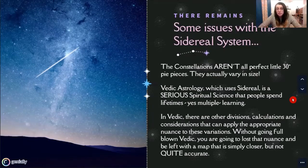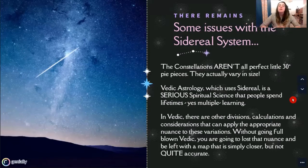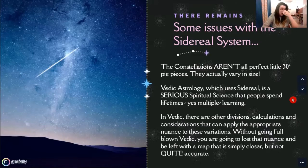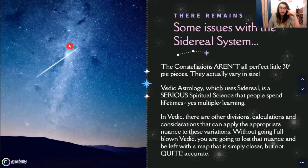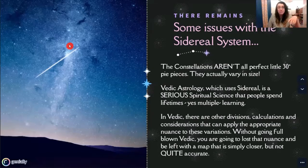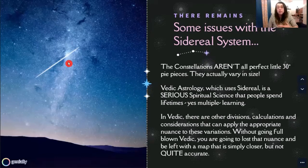There remain some issues with the sidereal system, in that the constellations aren't actually all perfect 30-degree pie pieces — they vary in size. Aries, for example, is quite small. Pisces is huge. Virgo is the largest constellation. Libra is pretty small. So there is actually quite a wide degree of variation. Vedic astrology, which uses sidereal, is a serious spiritual science that people spend lifetimes — yes, multiple — learning. It's a huge tradition passed on for a very, very long time. In a lot of ways they are the masters, with an unbroken line of tradition. There's tons of wisdom to be gained from studying Vedic, and there are all sorts of other divisions, calculations, and considerations that apply the appropriate nuance to this variation of sizes.